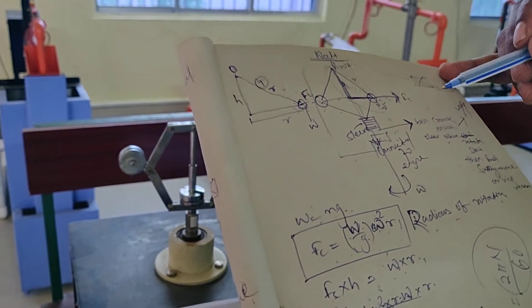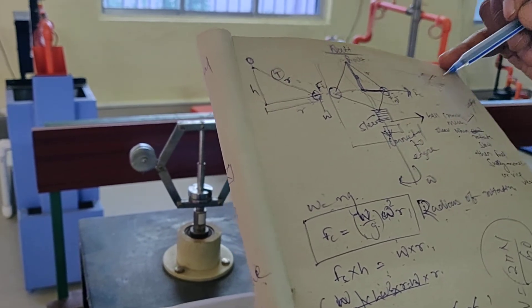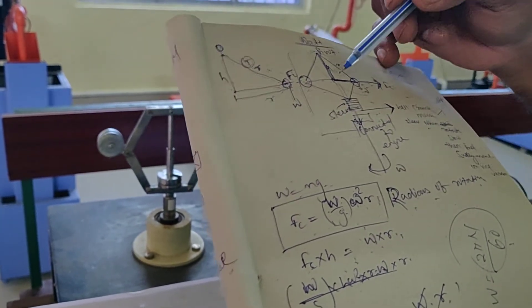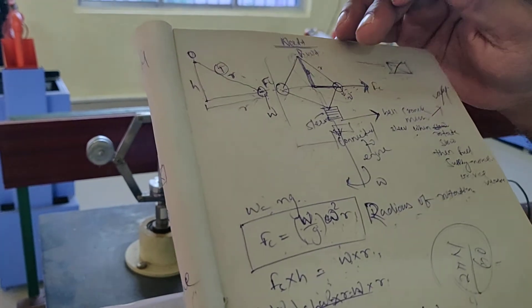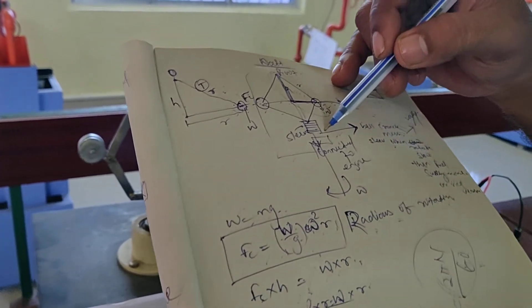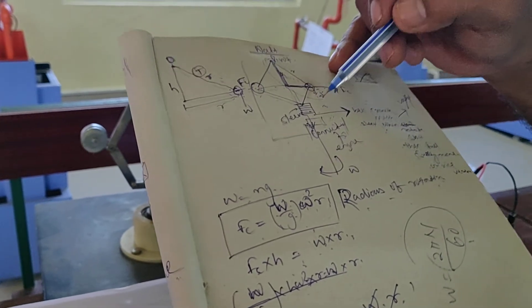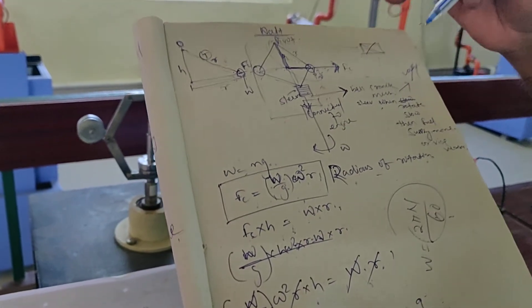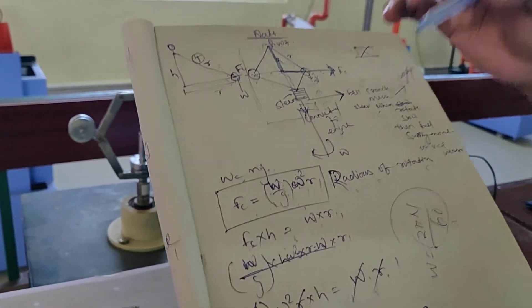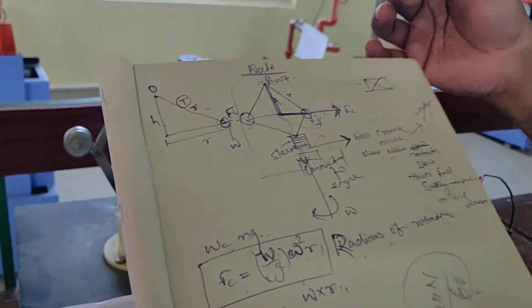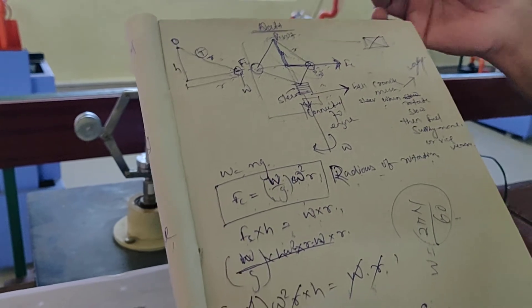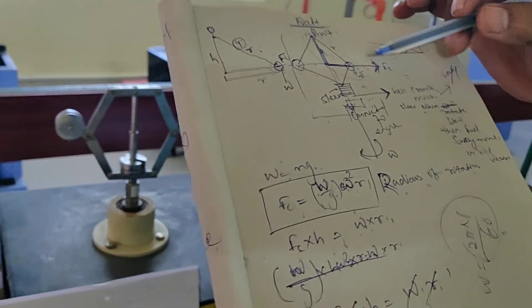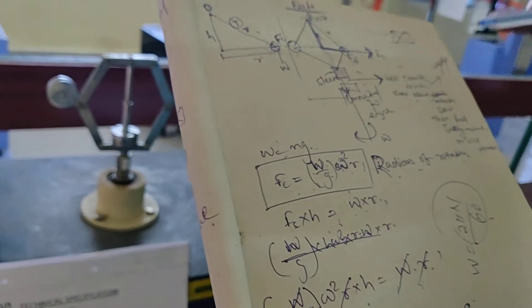When the engine has more load, the governor's speed decreases. That is why a bell crank mechanism is also attached with the sleeve, and that governs the throttle valve. The throttle valve supplies additional fuel to the engine so that the load decreases and the speed of the turbine or motor increases. In this way, the governor governs the fuel supply to the engine. This is the main function and main parts of the governor system.